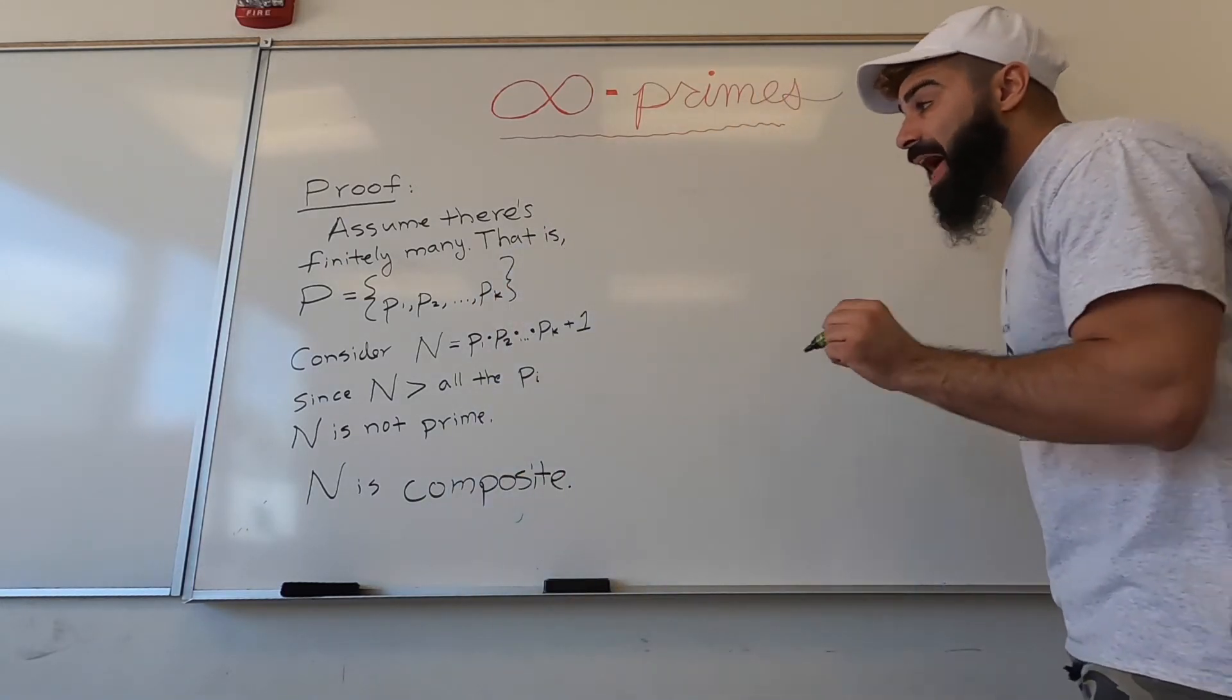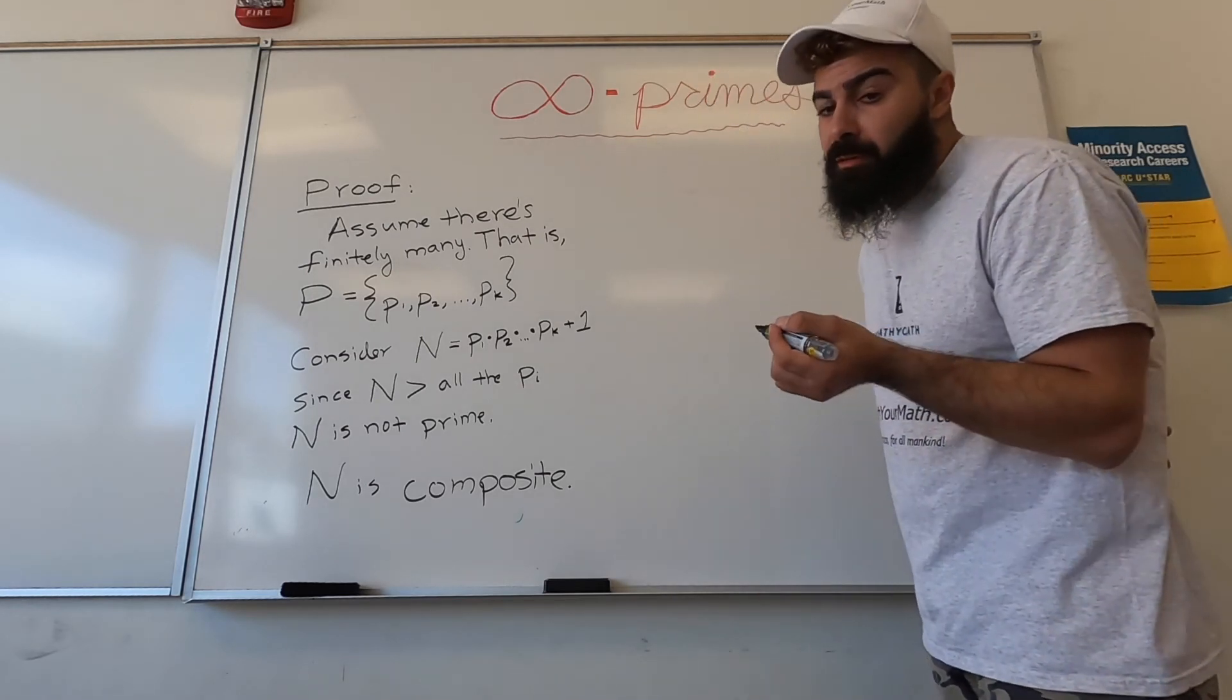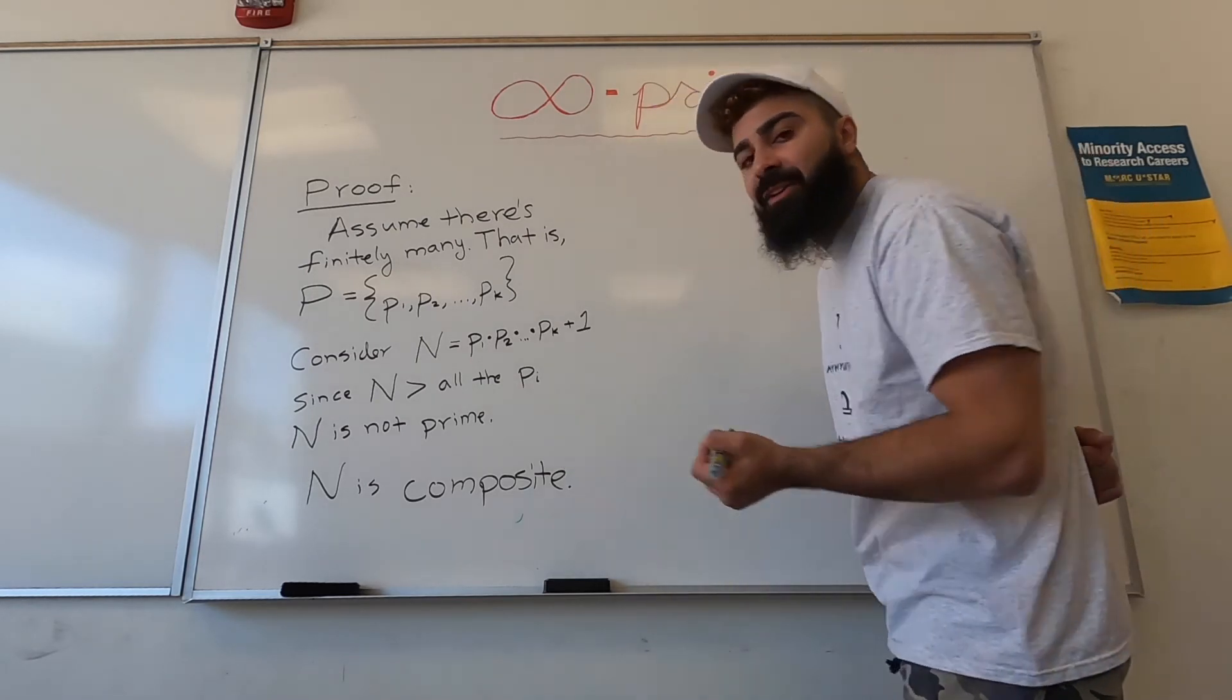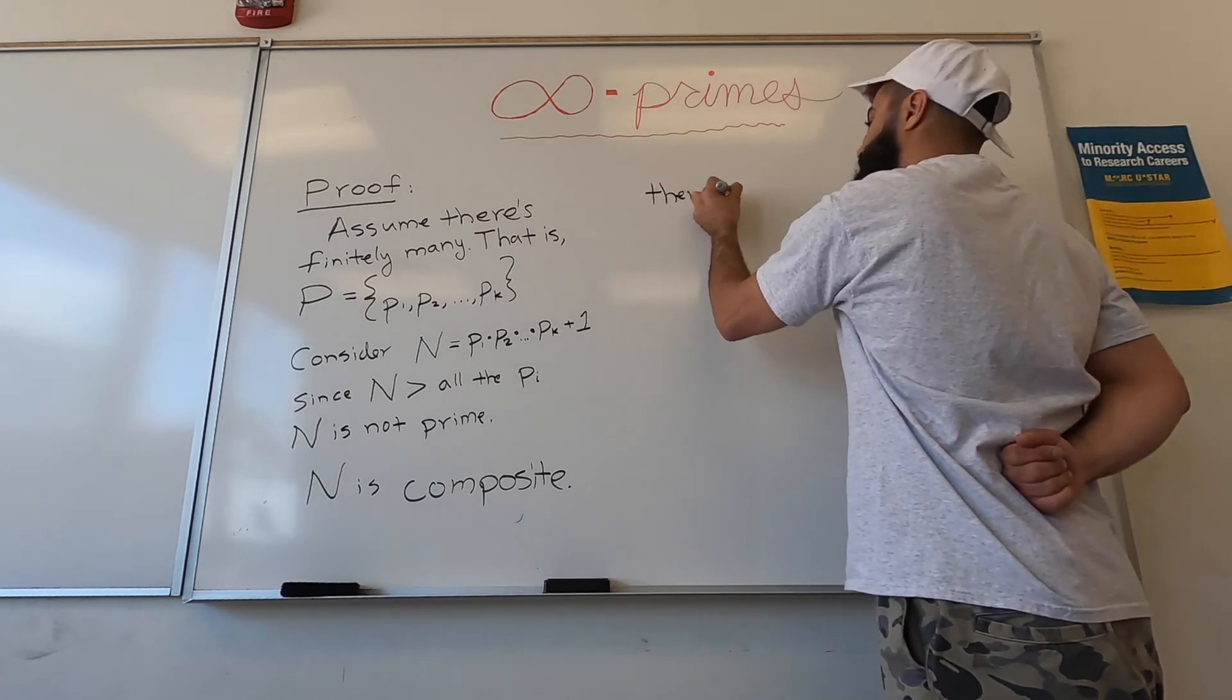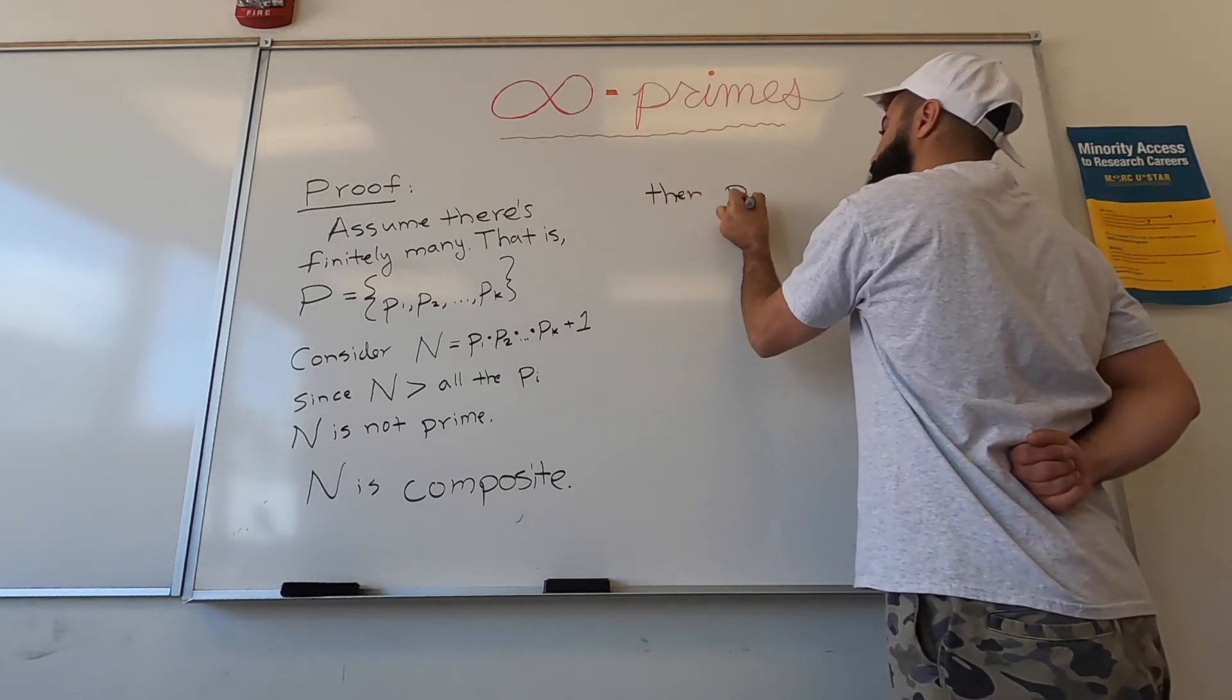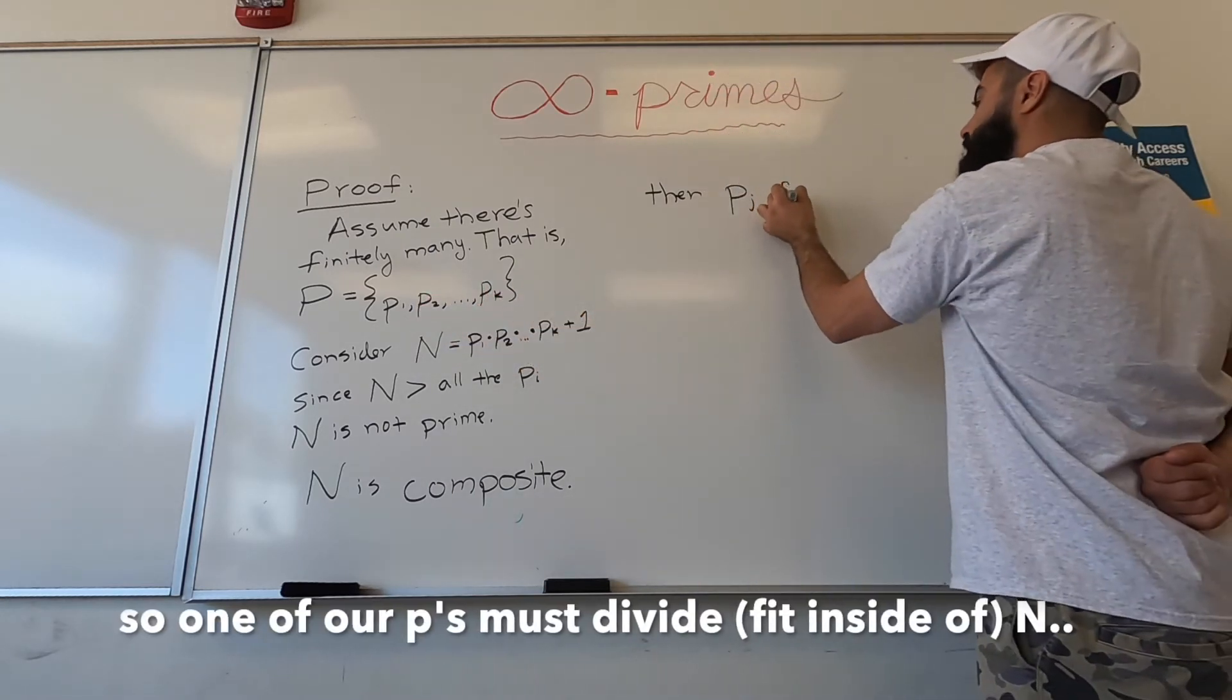That means that some prime in this world must be a factor of N. So then let's say p sub j - that means one of these guys fits inside N.